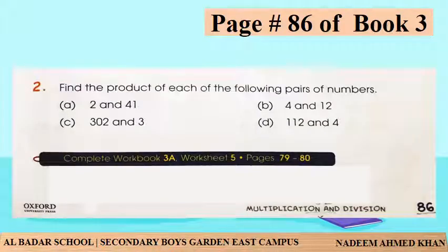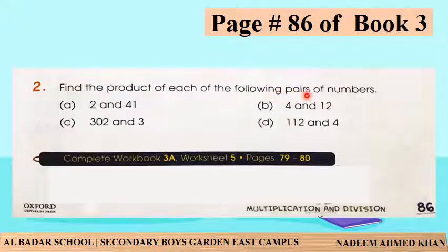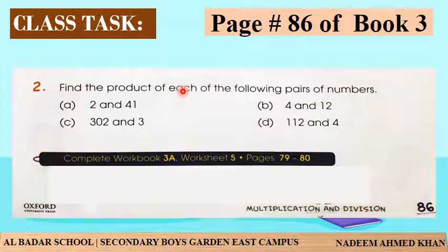Take out page number 86, book 3, question number 2: Find the product of each of the following pairs of numbers. Now let's try - ہر ایک pair of numbers کا product معلوم کیجئے۔ تو پیارے بچوں، product کیا ہوتا ہے - multiply۔ اب ہم ان questions کو explain کرتے ہیں۔